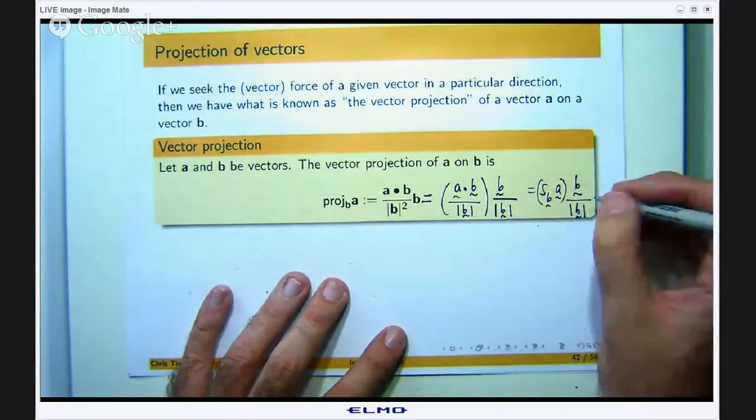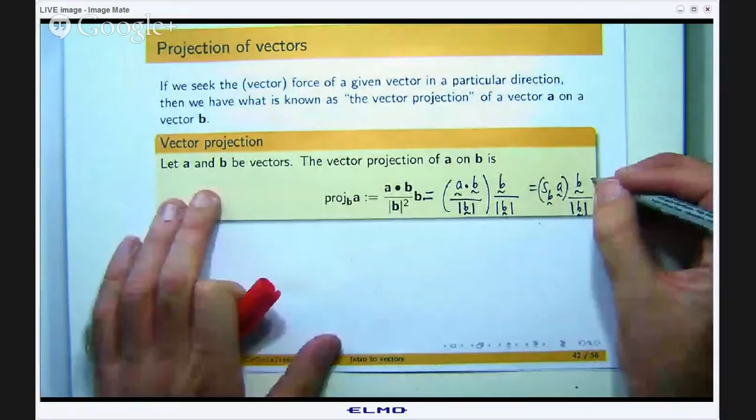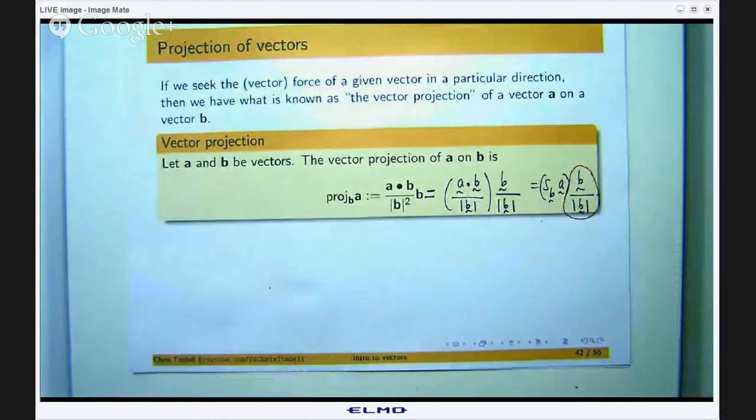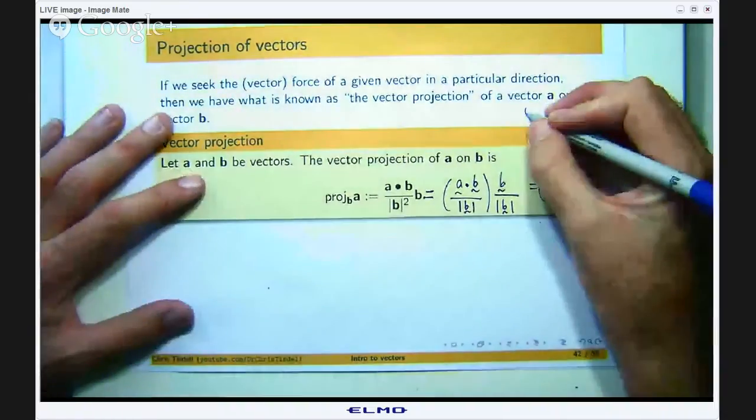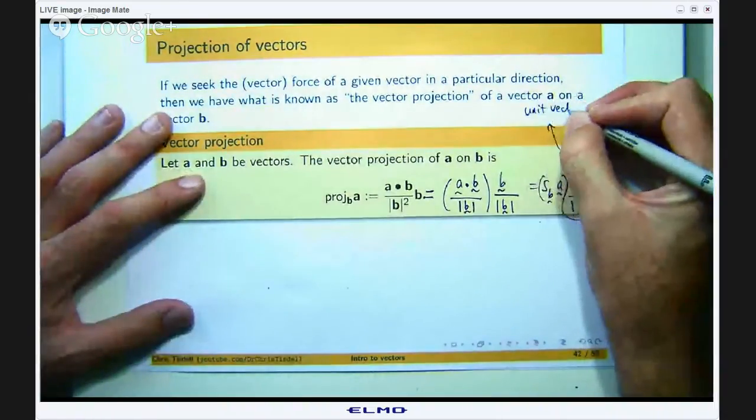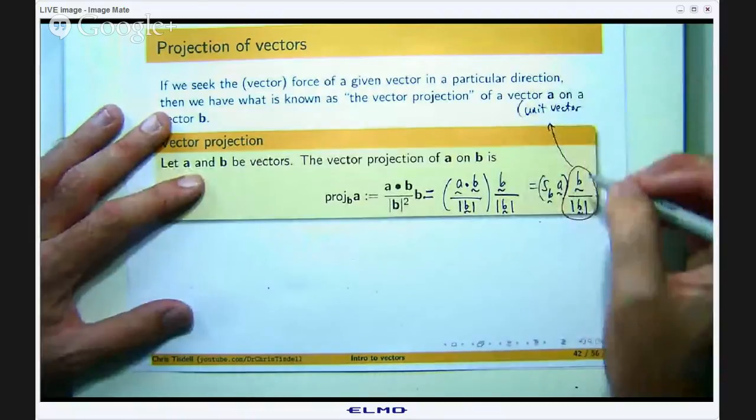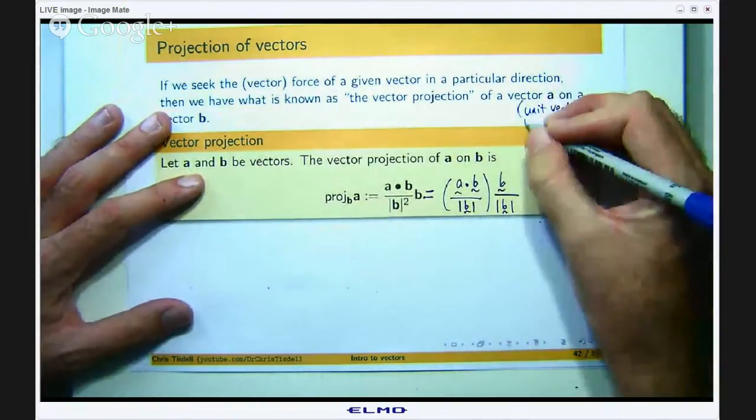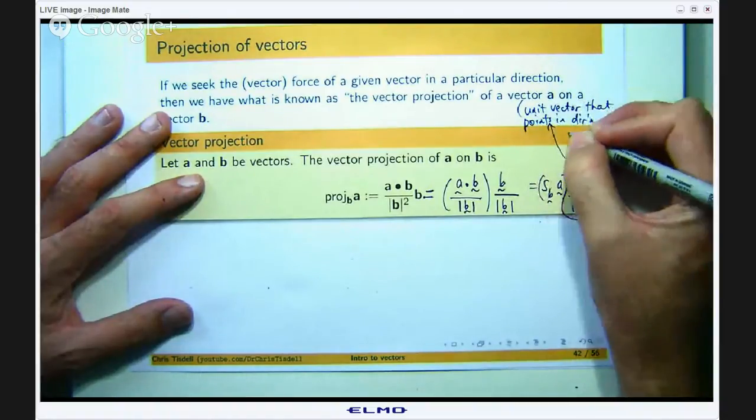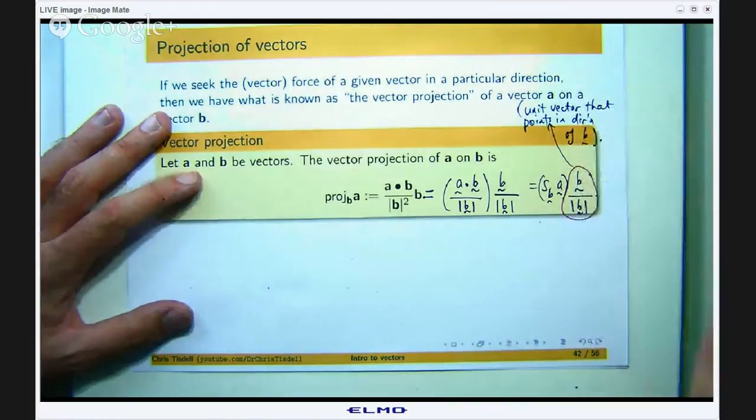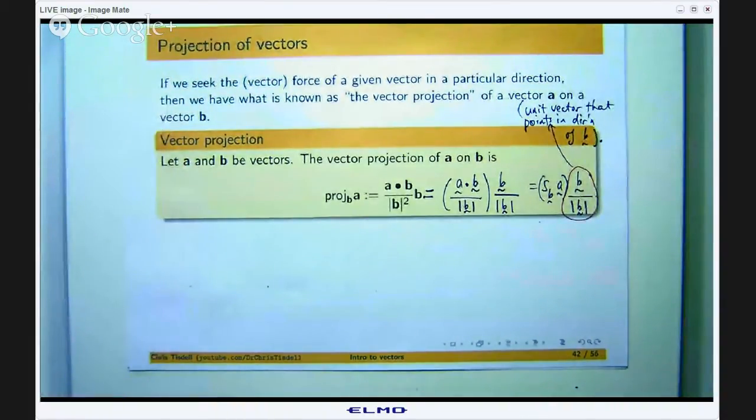What is this? This is a special vector where the vector B has been divided by its length. So this now is a unit vector. By unit vector I mean the vector has length 1 that points in the direction of the given vector B. If you take any vector and divide it by its length, the length of that new vector is always equal to 1.